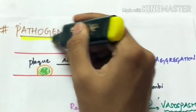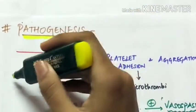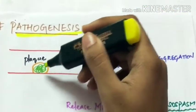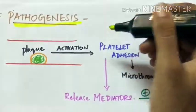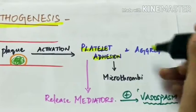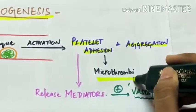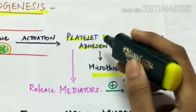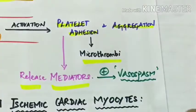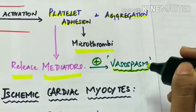The pathogenesis behind myocardial infarction begins with a coronary artery where there is an atherosclerotic block. When the plaque gets activated, it leads to platelet adhesion and aggregation. The platelet adhesion forms microthrombi, and platelet aggregation leads to the release of mediators like cytokines.